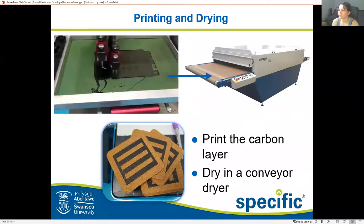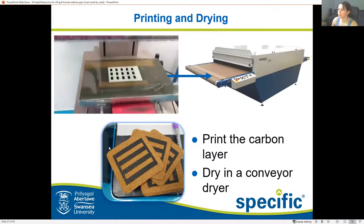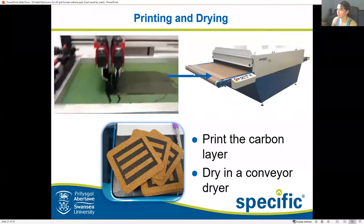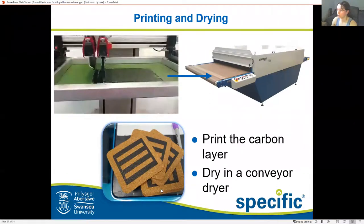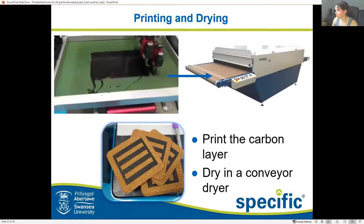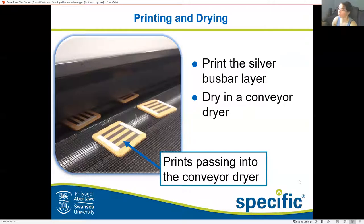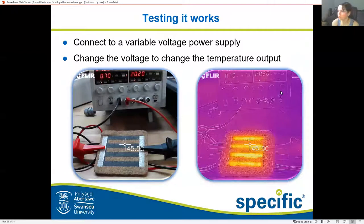After milling, the ink gets a final stir to improve its consistency and you have ink. The next thing we do is slap that ink onto our screen, print it with whatever settings and pattern we need, and that goes through the dryer. This is what the coasters look like after only the carbon layer is printed. Then we get the printer out again for the silver ink, and that goes through our big conveyor dryer at whatever temperature is needed to remove all of the solvent.